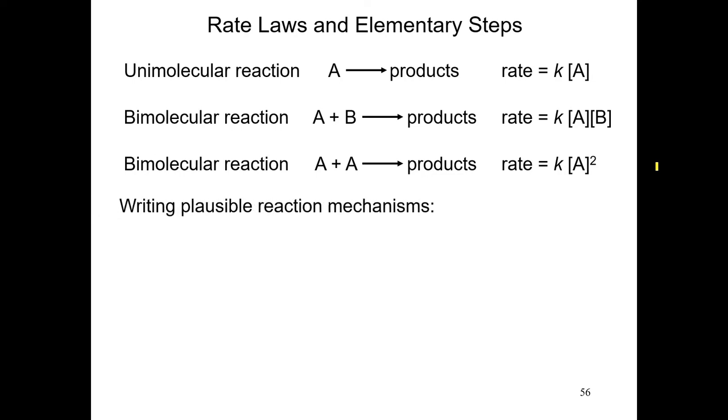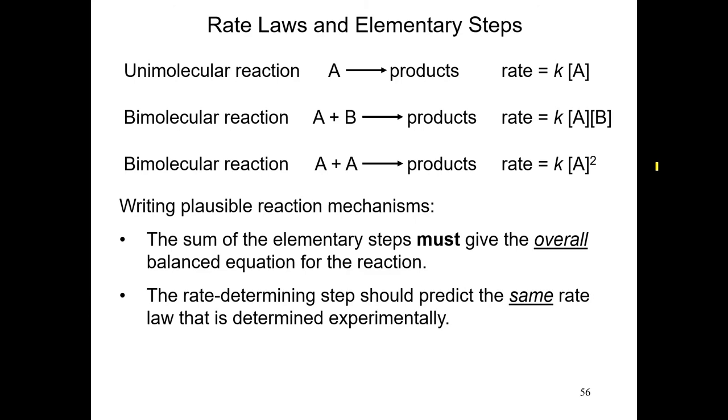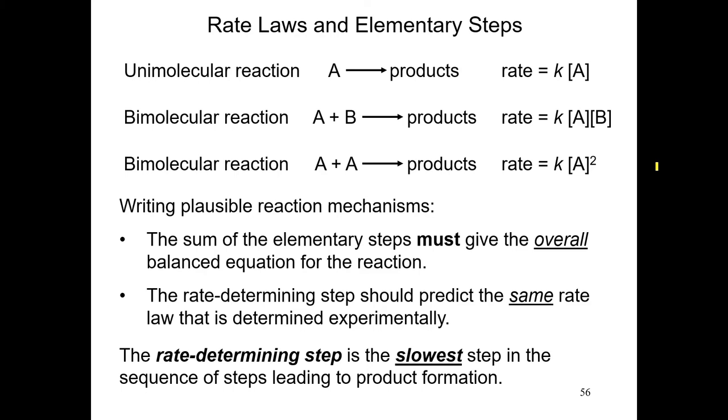Now, here's the important thing. In writing a plausible reaction mechanism, we have to take into account several important things. Let's call them rules. First, the sum of the elementary steps must give the overall balanced equation for the reaction. If you write up the steps and the total result of the adding of those steps does not give you the overall balanced equation, that mechanism does not work. The other important thing is there is in your mechanism something called the rate determining step. And that rate determining step should predict the same rate law that is determined experimentally. In other words, the rate of the reaction depends on the rate law of that specific step, that we call the rate determining step. The rate determining step is the slowest step in the sequence of steps leading to product formation.